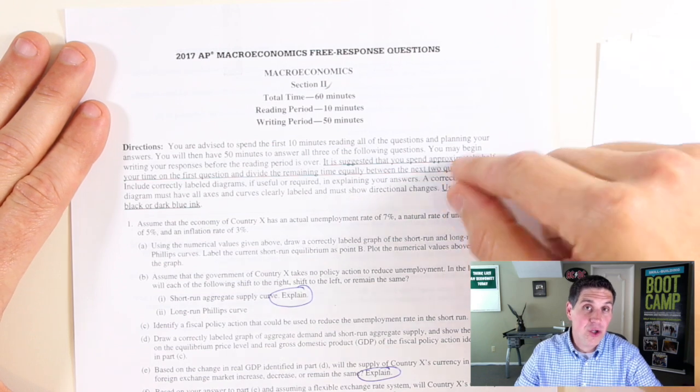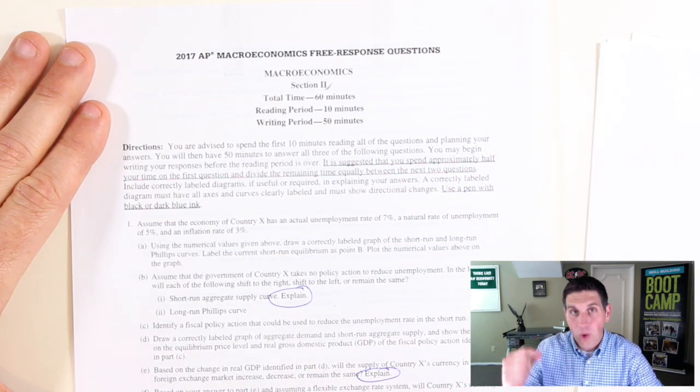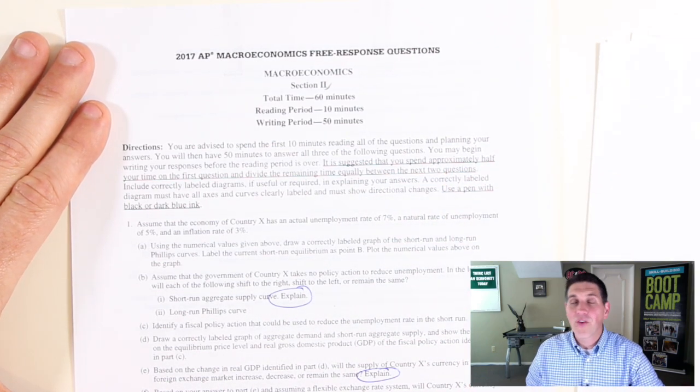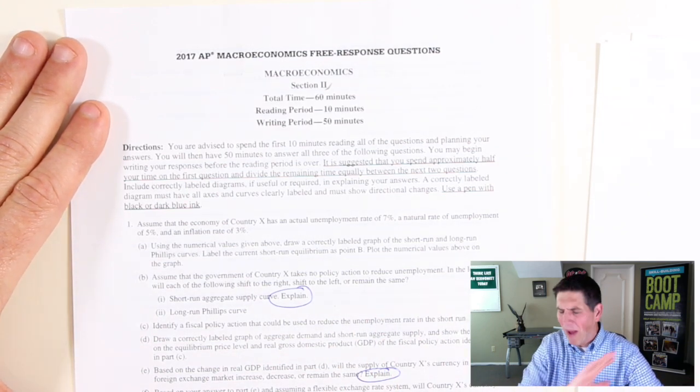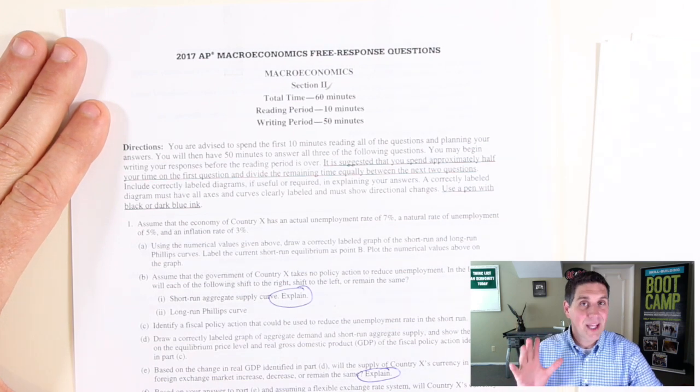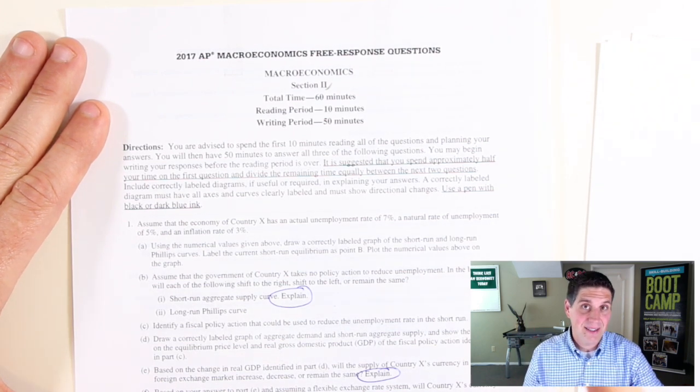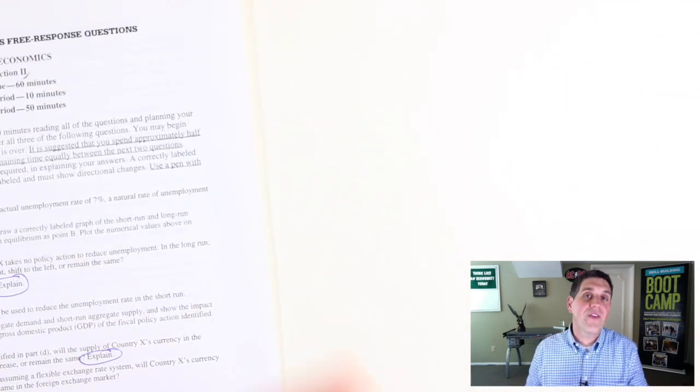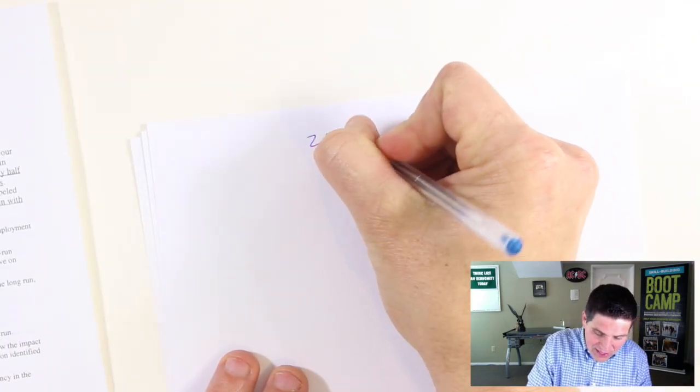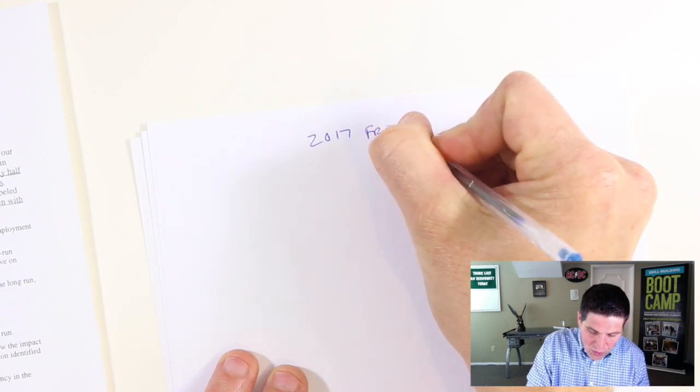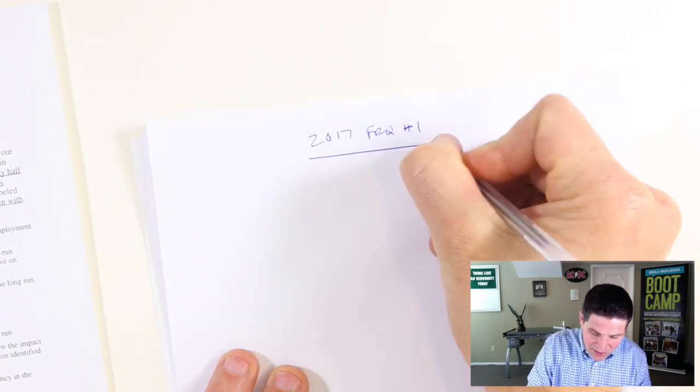So right now, print out the question for 2017 free response number one. Try it on your own. See if you're getting it. Then I'll go over all the answers and help you understand and verify you're actually understanding stuff because this is by far the best way to get ready for your test, which is to practice. So I hope you did well. Here we go. Let me go over the answers and do this. Again, we're talking about the 2017 FRQ number one for the AP exam.